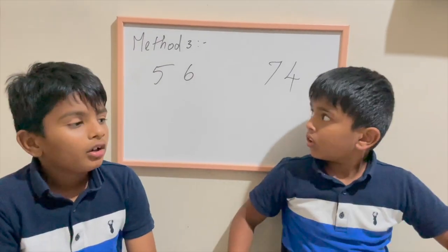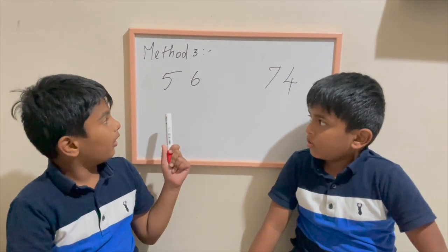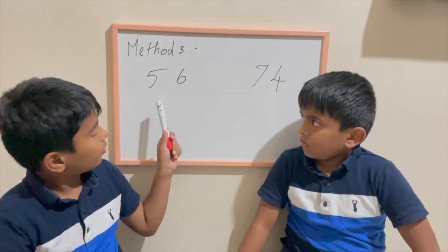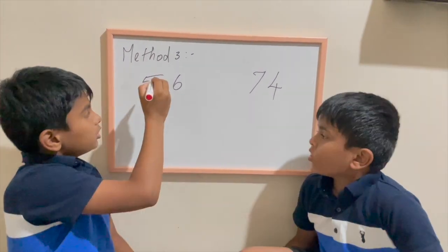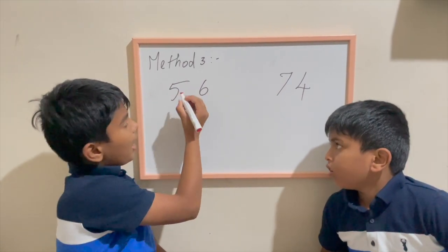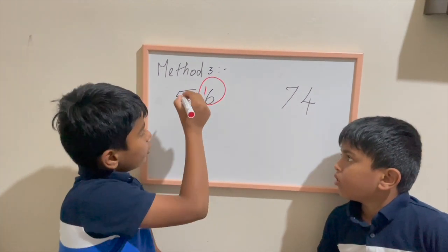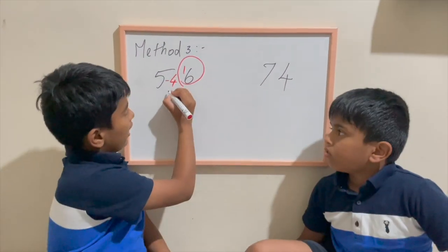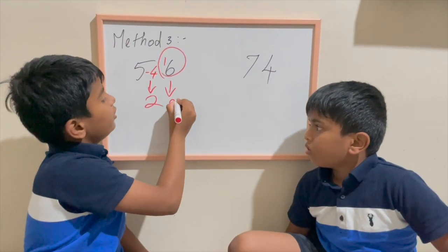So method 3, halving, for example: first number is an odd number and the second number is not. Right, tell me the answer for 56 half. 48. Correct. 56 half, the method is take 1 away from 5 equals 4. Put that 1 here, which makes this 16. Now 4 half is 2, 16 half is 8.